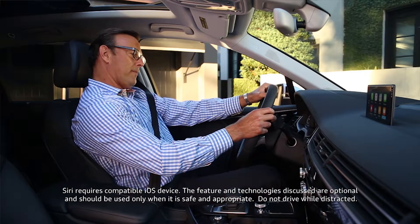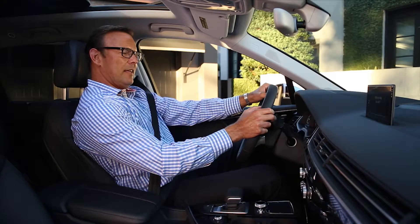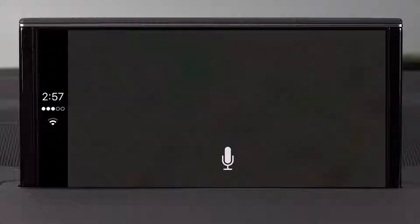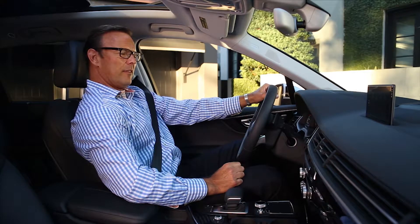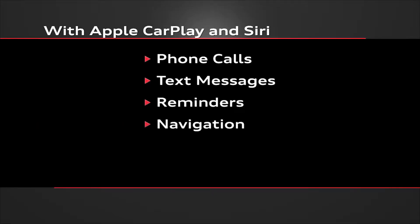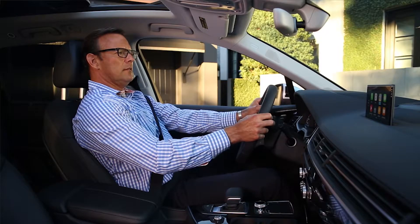To use Siri as your digital assistant, press and hold the talk button on the steering wheel until you hear a tone. You can use Siri to make and receive calls, send and receive text messages, set reminders, get turn-by-turn navigation, listen to music, explore Apple Maps, and many of the functions you would normally do with your iPhone. It's simply a matter of telling Siri what you want.